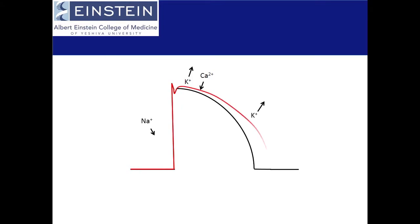This is an example of an action potential in Long QT syndrome, where repolarization time is increased. This can either be caused by too much sodium current or not enough potassium current.